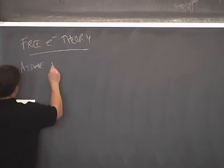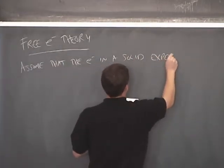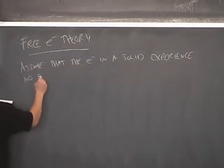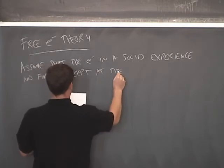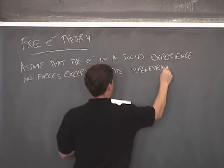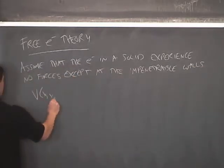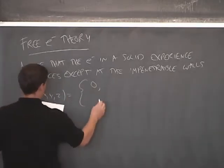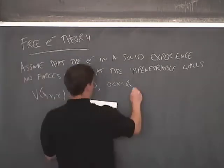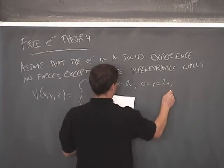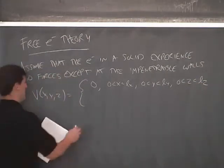So this will represent the simplest possible theory we could develop for a solid, known as free electron theory. And in this theory, we assume that the electrons in a solid experience no forces except at the impenetrable walls of the solid. And as a result, the potential, which is a three-dimensional potential, will be equal to zero if we assume the solid is existing in the x coordinate between zero and l sub x, between zero and l sub y in the y coordinate and between zero and l sub z in the z coordinate. So that's where the solid is located in space. There's no potential there. And infinity otherwise.